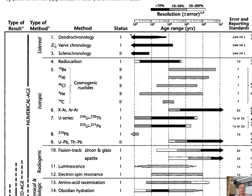Some sidereal methods can almost measure on an annual timescale — the obvious one is dendrochronology, tree rings. Varves are annual layering in sedimentary sequences like lakes or sometimes marine settings. The isotopic methods are ones many of us are familiar with. I'll talk about the cosmogenic and C14 methods — C14 is pretty good and precise, going to about 50,000 years.